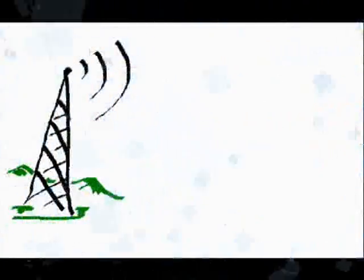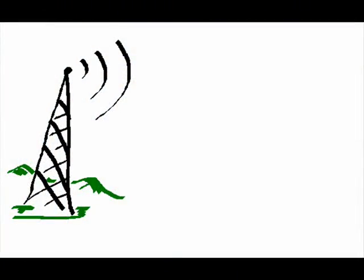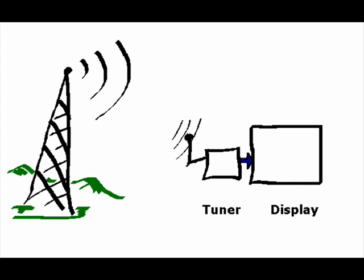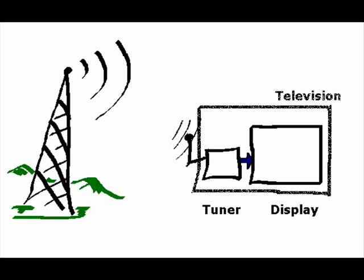The first main component is the transmission tower that transmits the video and audio signals. The second component is the tuner, which includes the antenna and the electronics that interpret the signal that is received. The third component is the display, an essential component to be able to see the TV signals that are received. Together, the tuner and the display make up the television set.